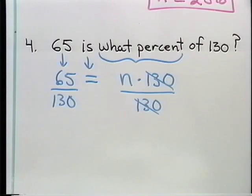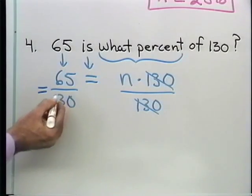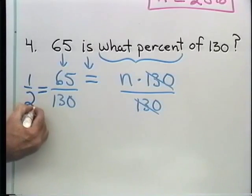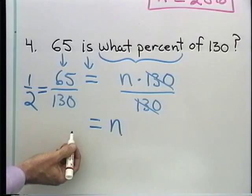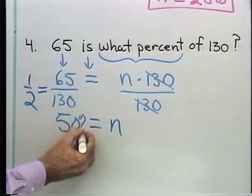That will come out to be, it's 65 over 130. I end up with n is equal to 1 half, which is 0.50, which is 50 percent.